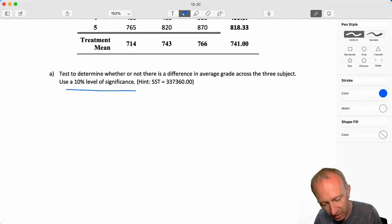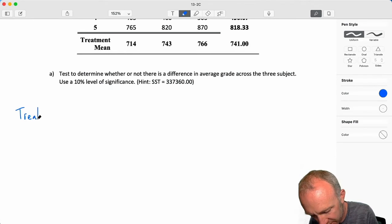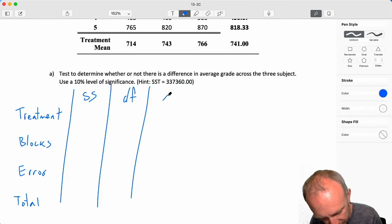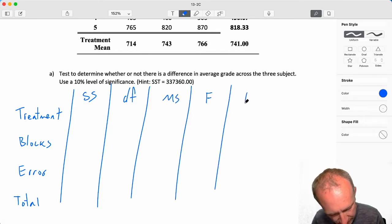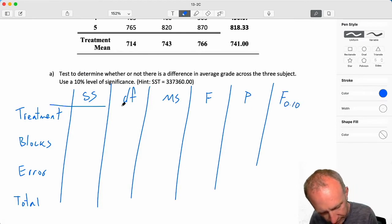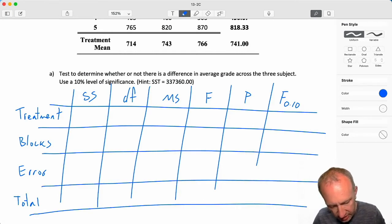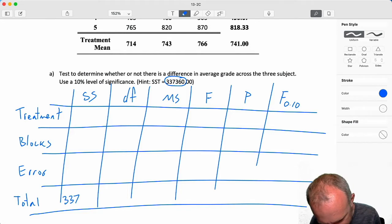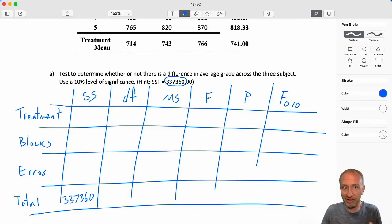Let's get into the ANOVA calculations. I have treatment, blocks, error, and total, sums of squares, degrees of freedom, mean square, F, P, and F critical. We have SST, 337,360. That's just given because the calculation for SSE requires matrix algebra. So if we have SST, we solve for SSTR and SSBL. SSE becomes much easier for us to calculate.